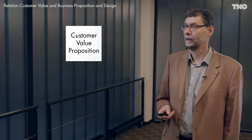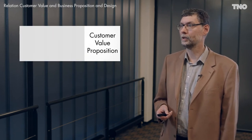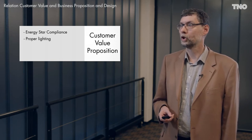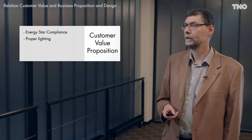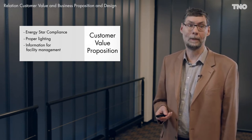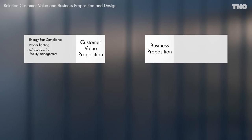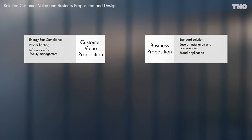If we look at this from a system architecture point of view, we see that there is a customer value proposition. In this case there is Energy Star compliance — the building is very efficient with its energy use. It provides proper lighting for all the users and information for facility management. We also have a business proposition: we provide a standard solution with ease of installation and commissioning, and it's a solution with broad application to many buildings in many settings.